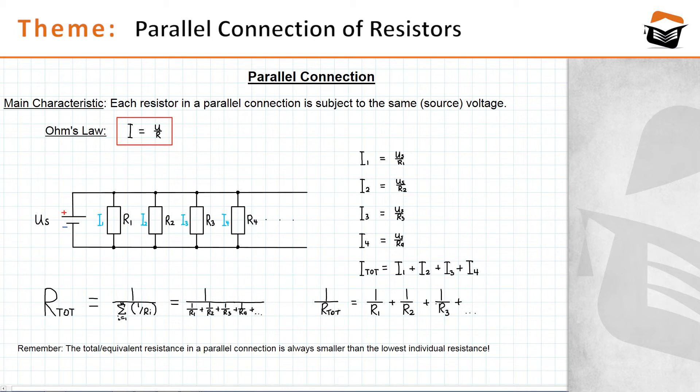If you look at this formula, you will realize that the total resistance in a parallel connection is always smaller than the lowest individual resistance. So if you have any initial resistance, let's say 100 ohms, and you add another resistor in a parallel connection, the total resistance will be lower than 100 ohms. Remember that in a parallel connection, the total resistance is always smaller than the lowest individual resistance.